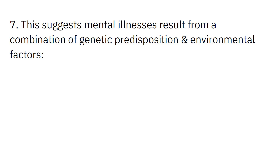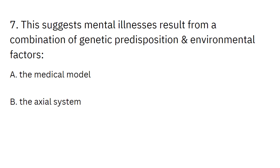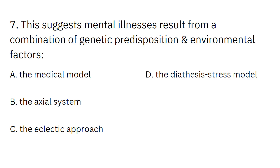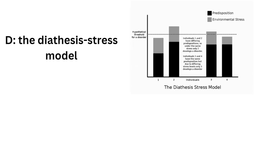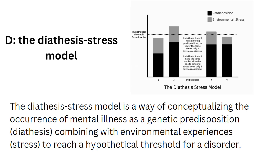This suggests mental illnesses result from a combination of genetic predisposition and environmental factors. Answer choices: the medical model, the axial system, the eclectic approach, the diathesis stress model, the chemical imbalance model. And this would be D, the diathesis stress model. The diathesis stress model is a way of conceptualizing the occurrence of mental illness as a genetic predisposition, or diathesis, combining with environmental experiences, or stress, to reach a hypothetical threshold for a particular disorder.